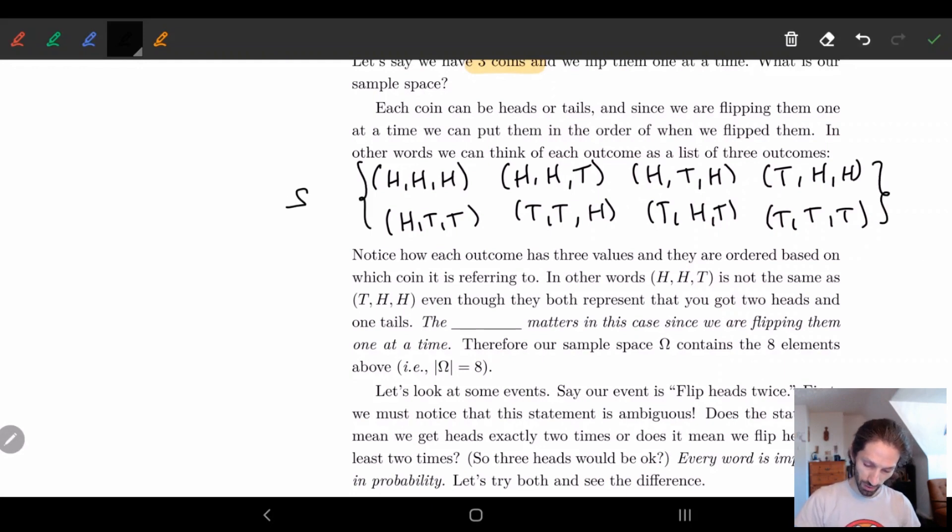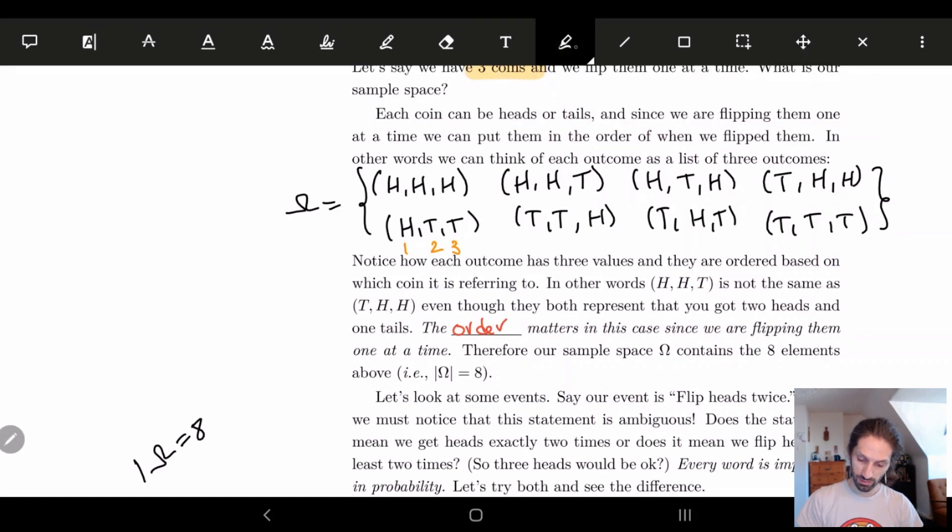So in this case we have omega equal to this whole set. Something we'll want to know later on is if you notice here we have eight elements. So we'll mark down that the size of omega is equal to eight. Notice how each of these has three different values, and basically this is keeping track of which coin did that value. So the first coin is heads, second coin is tails, third coin is tails in this example. And basically what this means is that the order matters in this case.